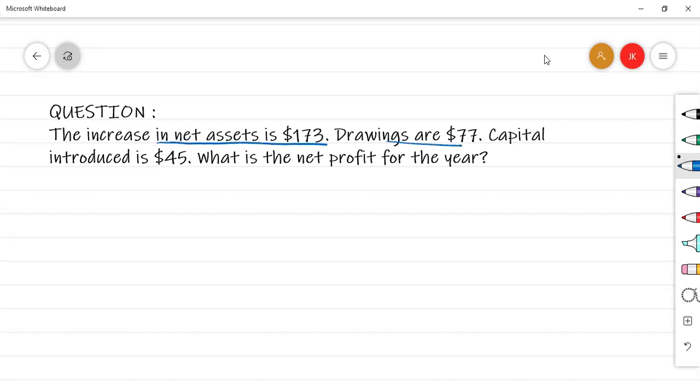You have $77 in drawings, capital introduced that is $45 or additional investment. And the requirement is to calculate the amount of profit.